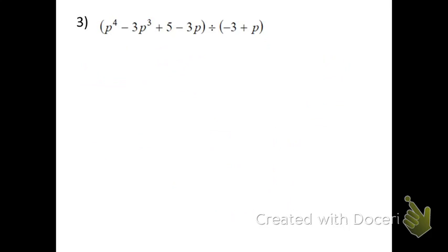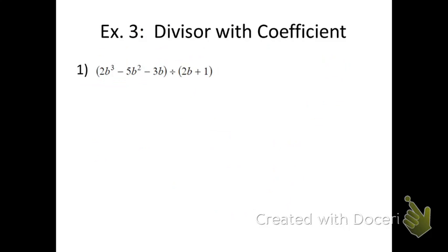Continuing onward, here's another example you could do. It shows descending exponents. Now the third thing we want to look at is the divisor with a coefficient. In most of our examples so far, you see there's usually no coefficient in front of the divisor. But in this case, we have a coefficient of 2.